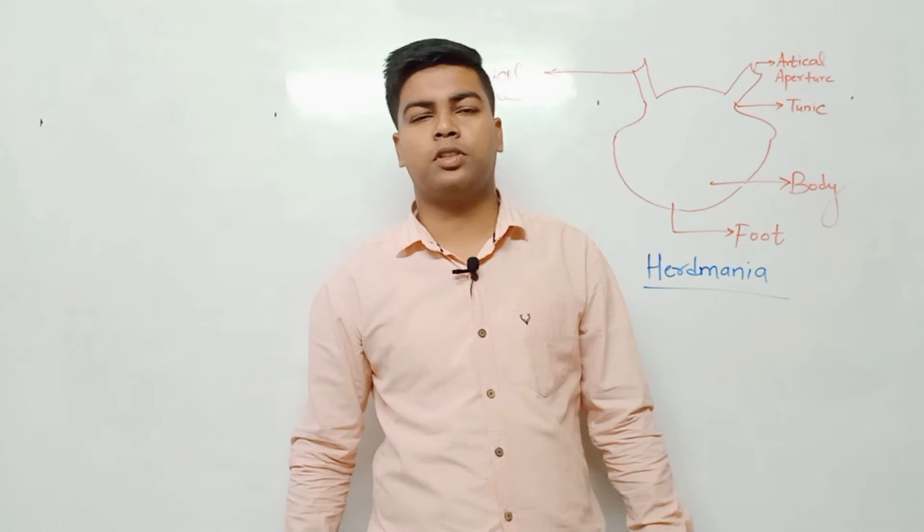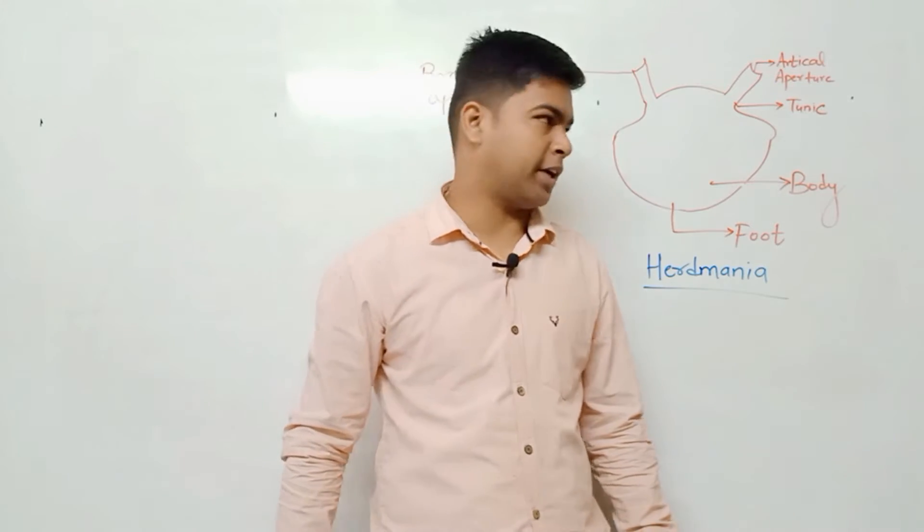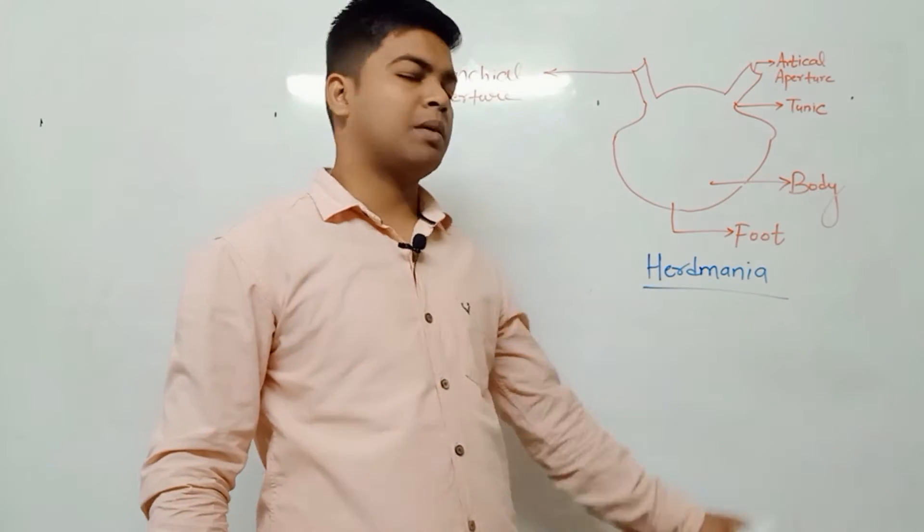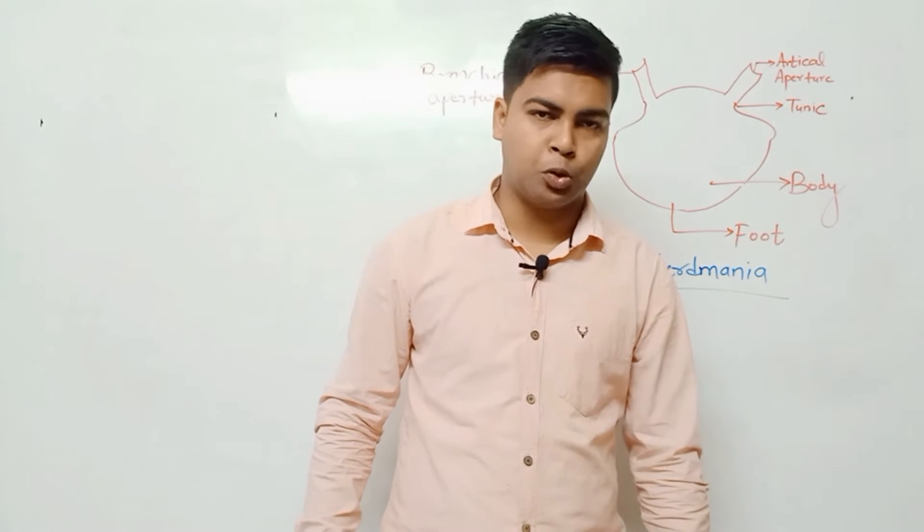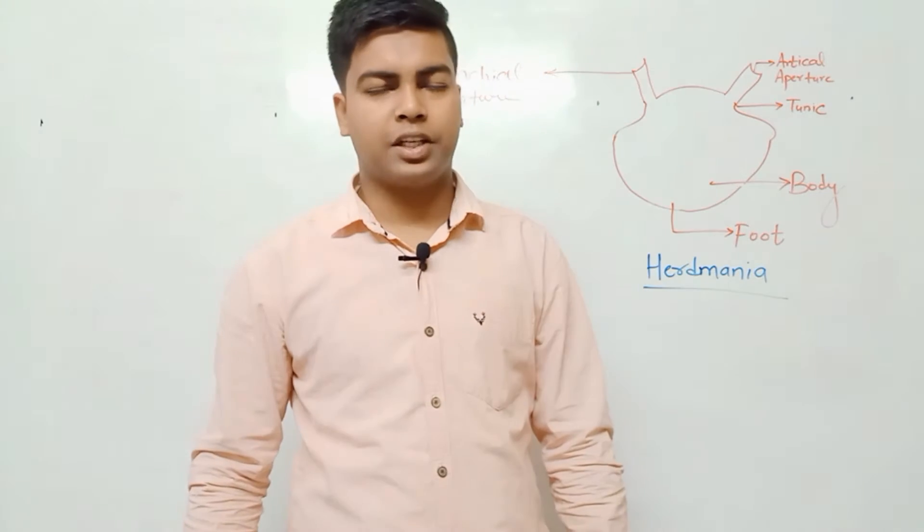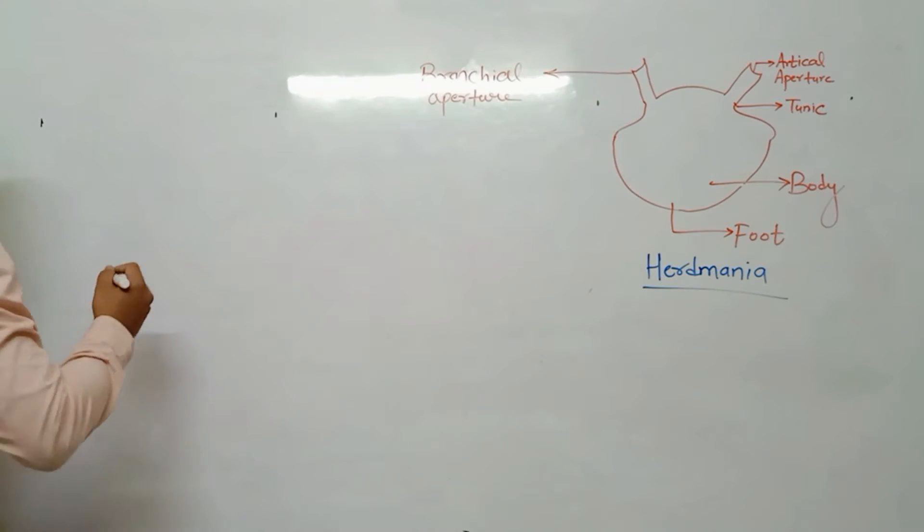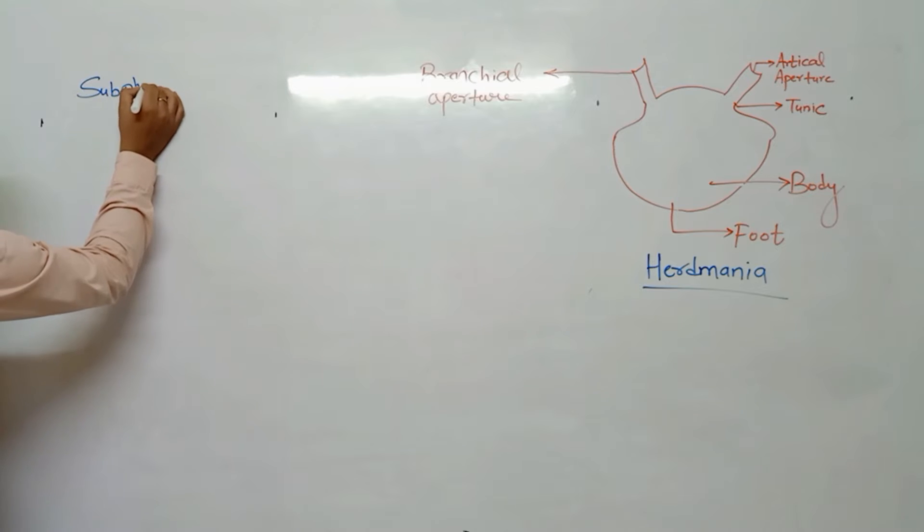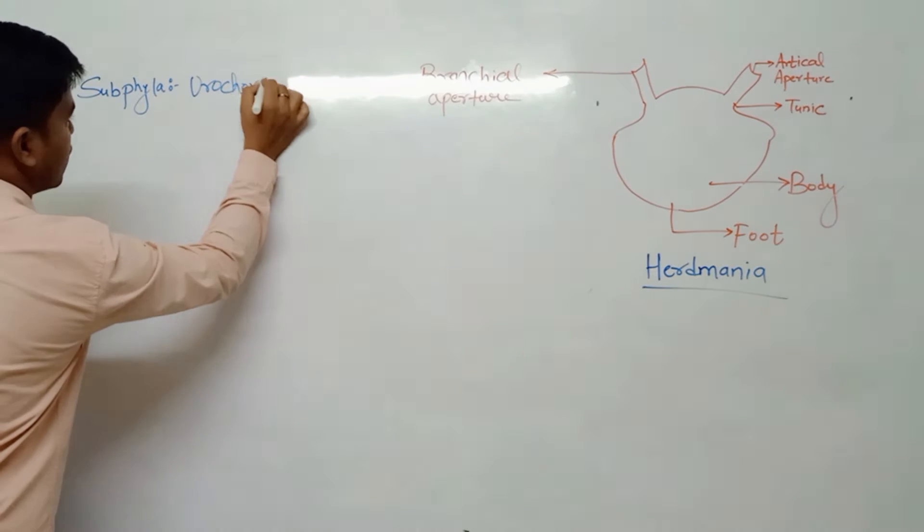Now we are going to discuss subphyla urocordates, and this is the example of Herdmania which belongs to subphyla urocordates. In this lecture we will study the characters of urocordates. First character is subphyla urocordates.